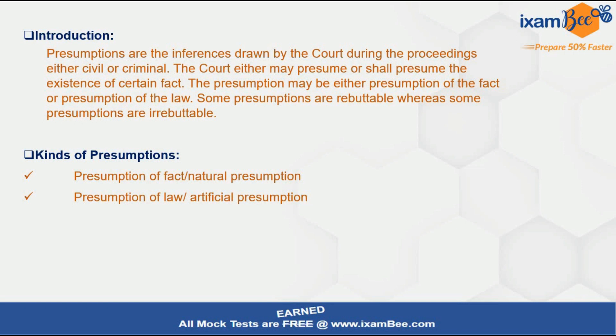Presumption of law, or artificial presumption, is where the law comes into picture — equivalent to 'shall presume.' The court's discretion becomes less; law directs the court to presume something until and unless it is rebutted — meaning refuted or contested by contrasting proof. In presumption of fact, it is the court's discretion whether to call for proof. In presumption of law, the court is directed by law, and if contradicting proof is presented by the opposite party, that can be taken into account.